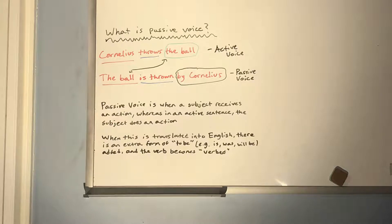When translated into English, passive voice will have an extra form of 'to be' — is, was, will be — and in most forms it will have 'be' or 'being.' Another way of saying 'the ball is thrown by Cornelius' is 'the ball is being thrown by Cornelius.' Also, the verb will be translated as 'verb-ed' rather than just 'verb' or 'verbs.' You'll either see 'be' or 'being,' and you'll see a verb that looks like it's in the past. Those are the two main characteristics of passive.